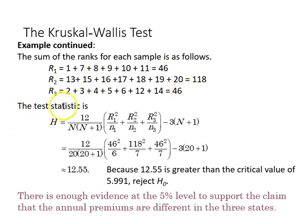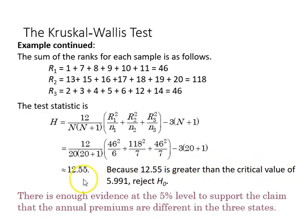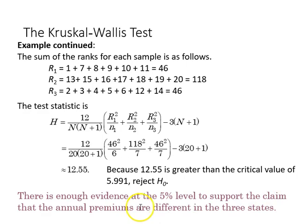We find our test statistic with that information plugged in, and it works out to 12.55. Since 12.55 is greater than the critical value of 5.991, we reject the null hypothesis. In the context of the original claim, there is enough evidence at the 5% level to support the claim that the annual premiums are different in the three states.